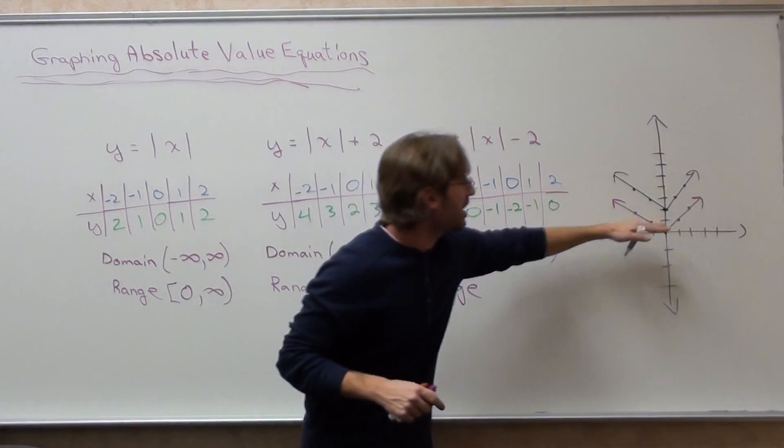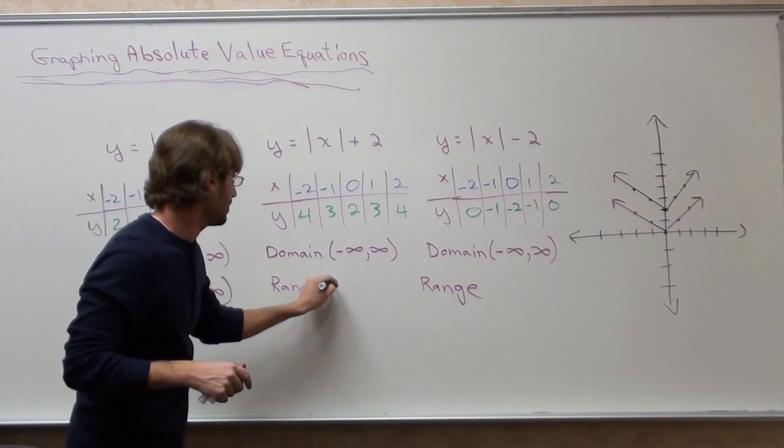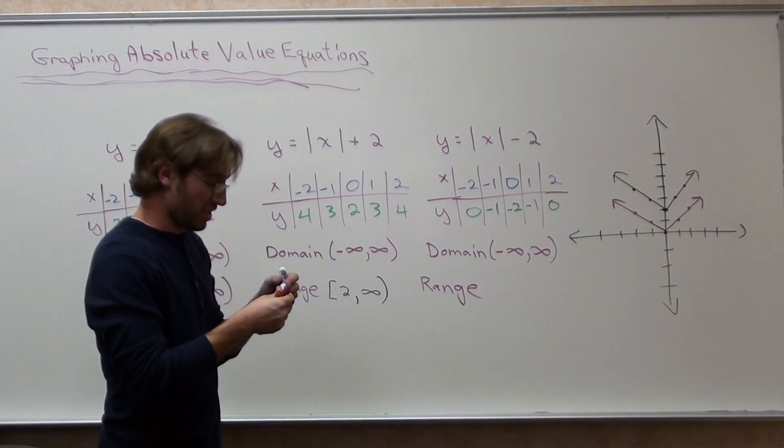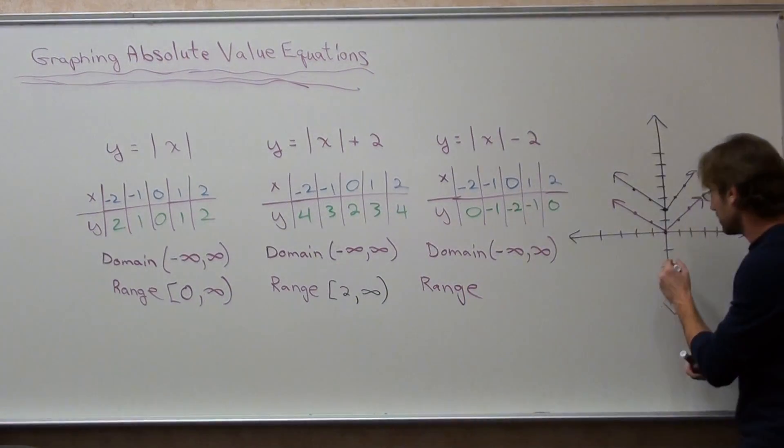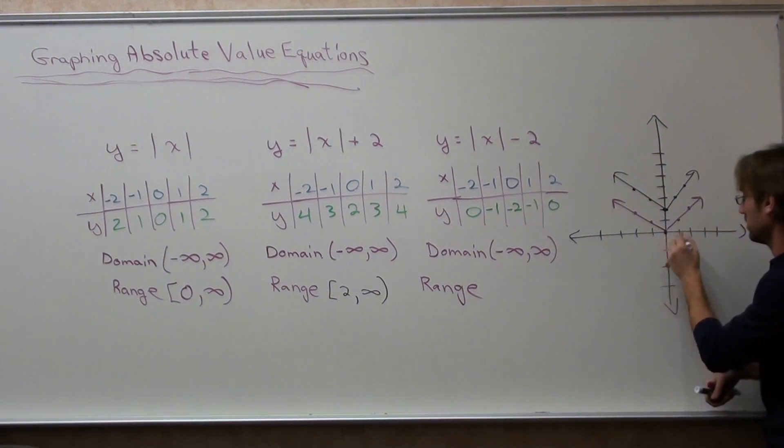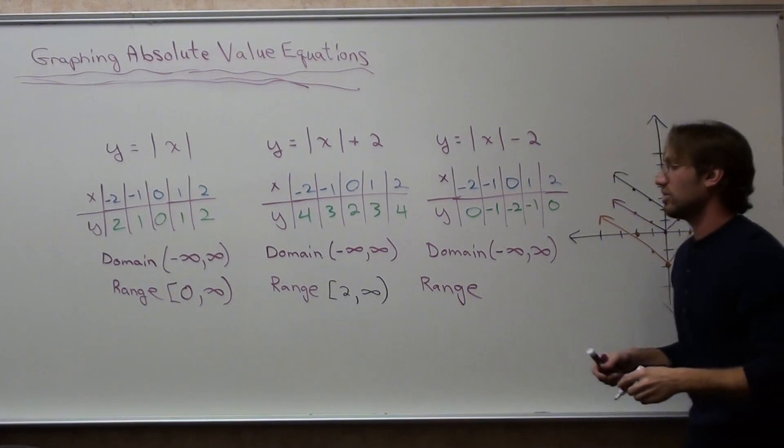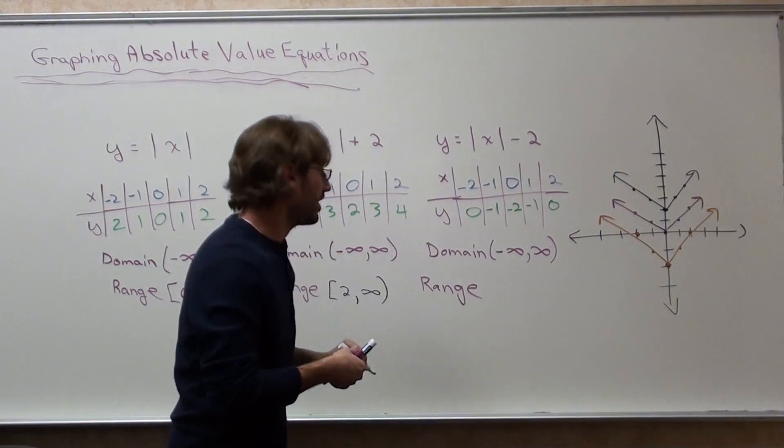The range is different. The lowest value is 2 and goes all the way up to infinity. I'm going to go ahead and graph this one in brown. Hopefully you'll see the difference. And the range, the lowest value is negative 2 and it extends all the way up.